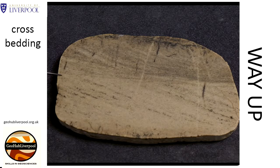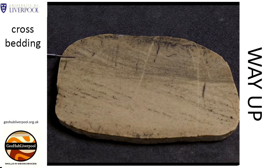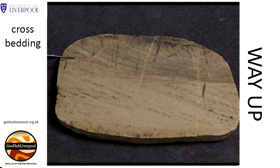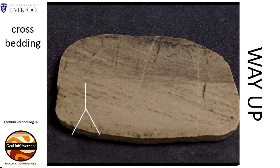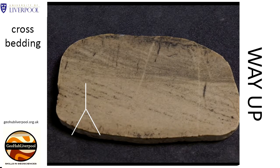You can work out the direction of younging from the truncation of the older cross bedding and by the upward curving cross beds that formed on top of these older layers. In the field, if you are recording way up on a sketch of these sedimentary structures, you would indicate the younging direction with this symbol.